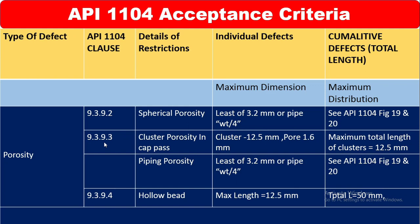Now we go to porosity. Clause 9.3.9.2 covers spherical porosity. The maximum dimension for individual defect is the least of 3.2 mm or pipe wall thickness divided by 4 — whichever is less. For cumulative defects, refer to API 1104 figures 19 and 20 where all the porosity limits are clearly shown.